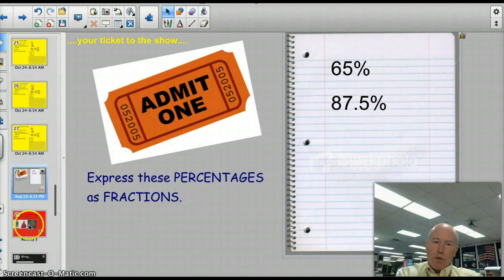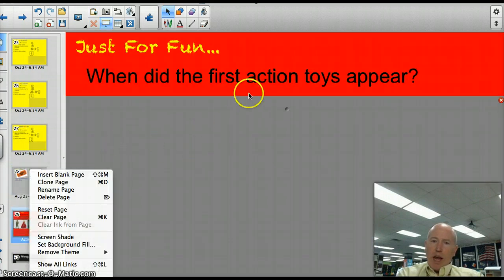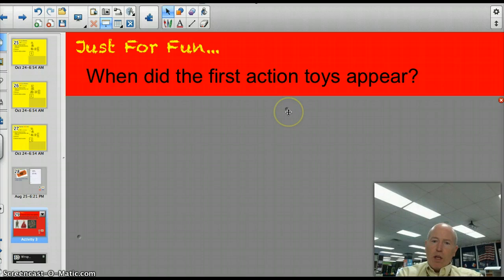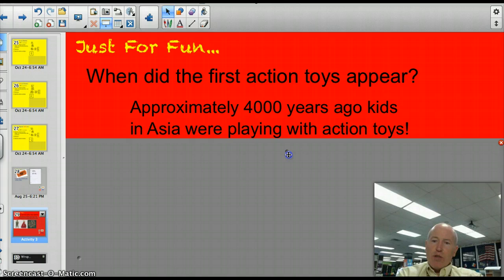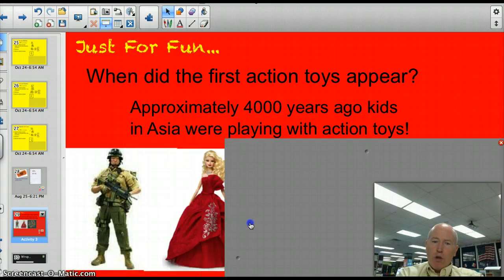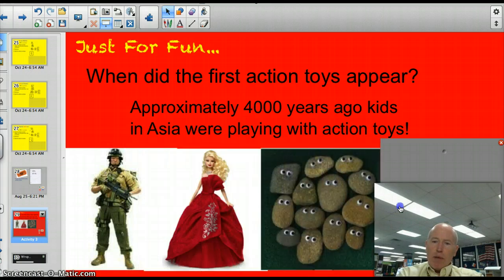Let's take a look at the answer to the trivia question. When did the first action toys appear? Well, it wasn't the G.I. Joe. But approximately 4,000 years ago, kids in Asia were playing with action toys. And I'm not sure what they look like. But I'm pretty sure it wasn't G.I. Joe or Barbie. Maybe it would have looked something like this. Who knows?